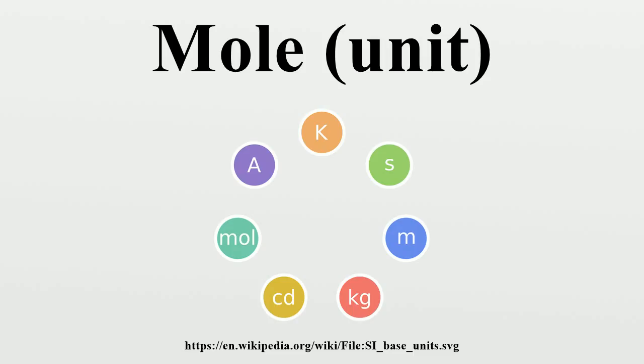Other units called mole: chemical engineers use the concept extensively, but the unit is rather small for industrial use. For convenience in avoiding conversions in the imperial system, some engineers adopted the pound mole, which is defined as the number of entities in 12 pounds of ¹²C. One pound mole is equal to 453.59237 moles.